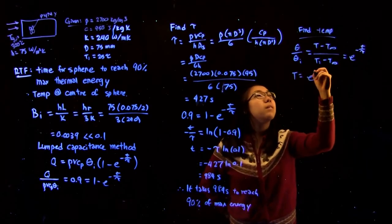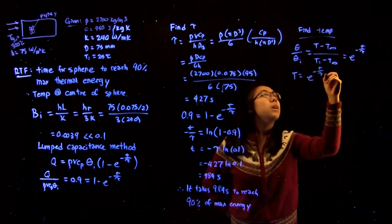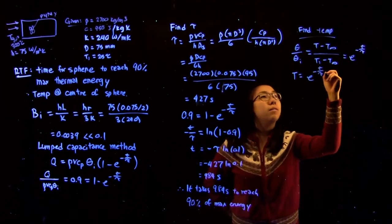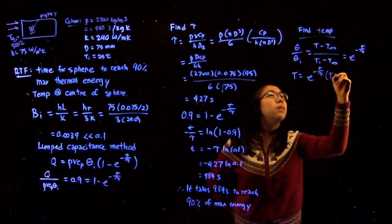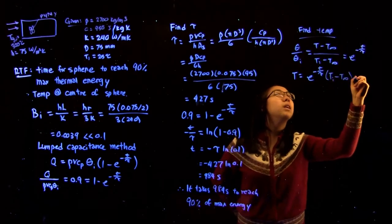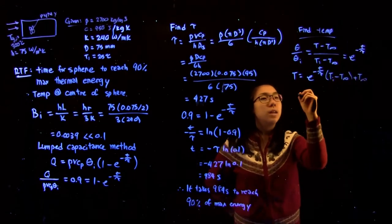This gives us T equals e to the minus T over tau times (T_initial minus T_infinity) plus T_infinity.